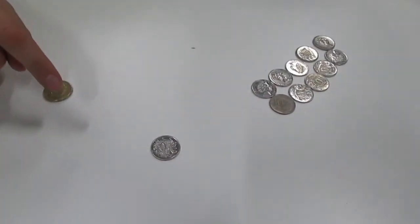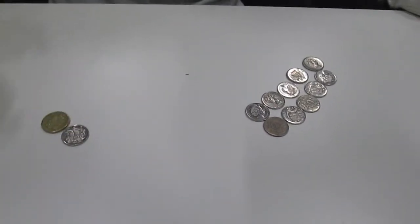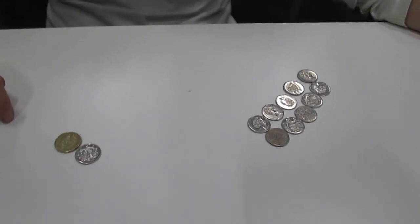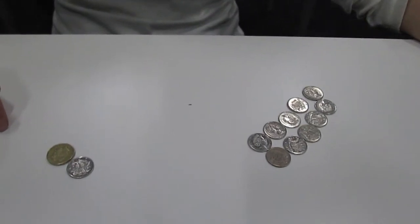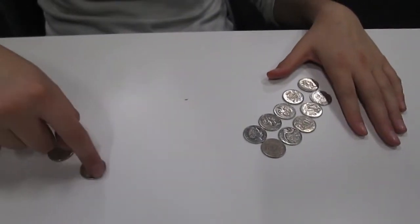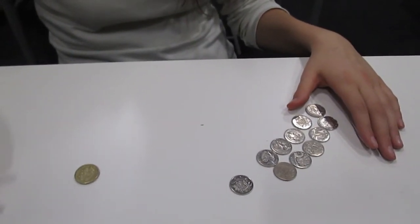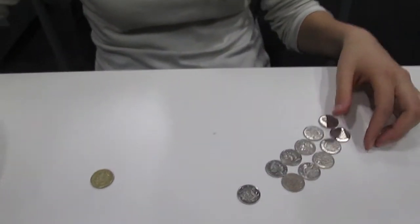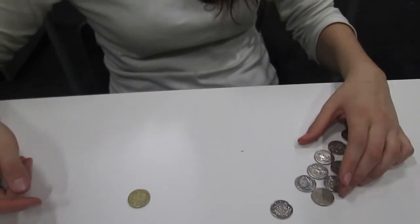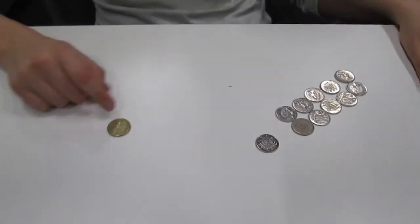So show me what a dollar ten would look like. This is a dollar. A dollar ten. How else could we make up that combination? Well, this is a dollar too so we can just move the 10 cents over. So fantastic. So what you actually did there was count it on. Yes, I did. And added another 10 cents which makes a dollar ten.